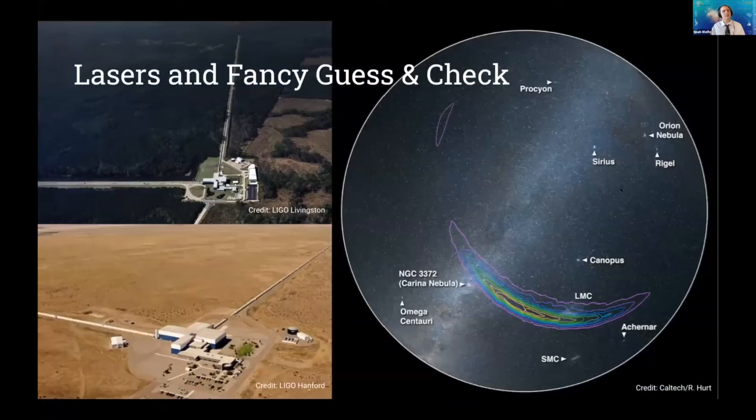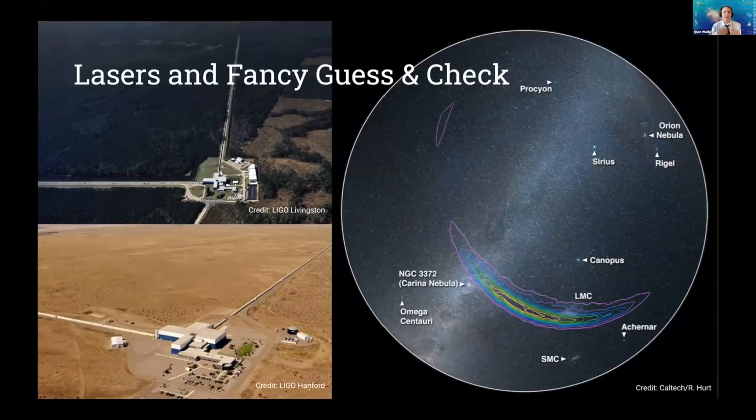And so the question is, how do we actually detect these? Well, it's a combination of high powered lasers and fancy guess and check. It turns out that if you want to detect a gravitational wave, you need to detect a very, very tiny change in distance because, again, space is stretching and squeezing in a periodic fashion. And to do that, we use something called a laser interferometer.